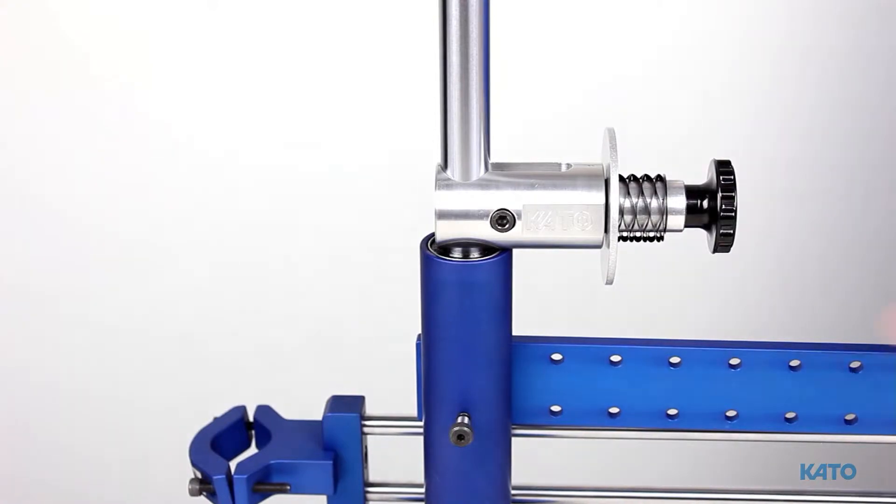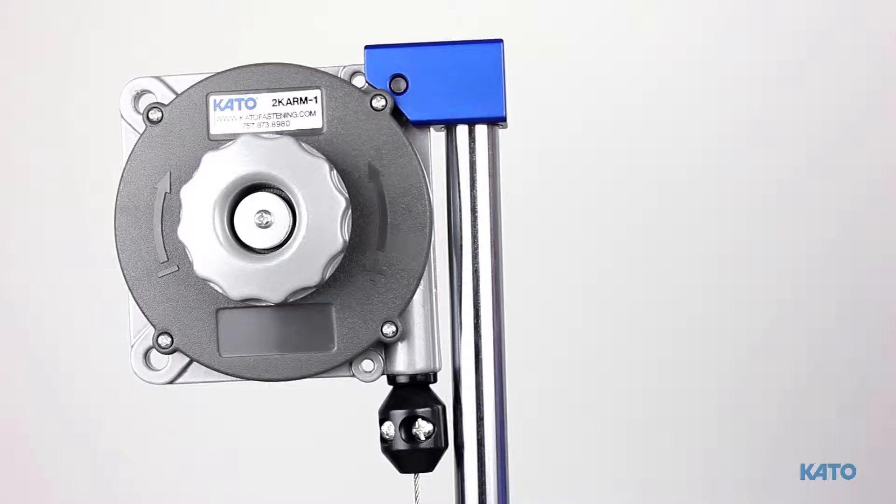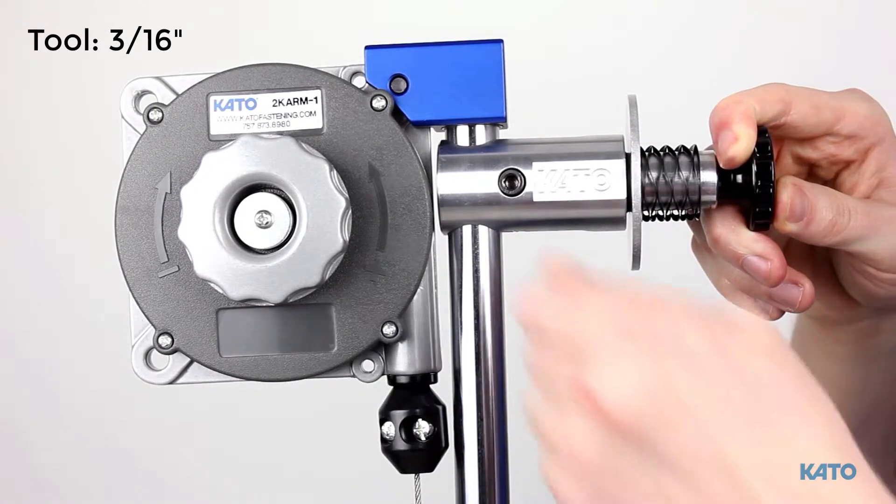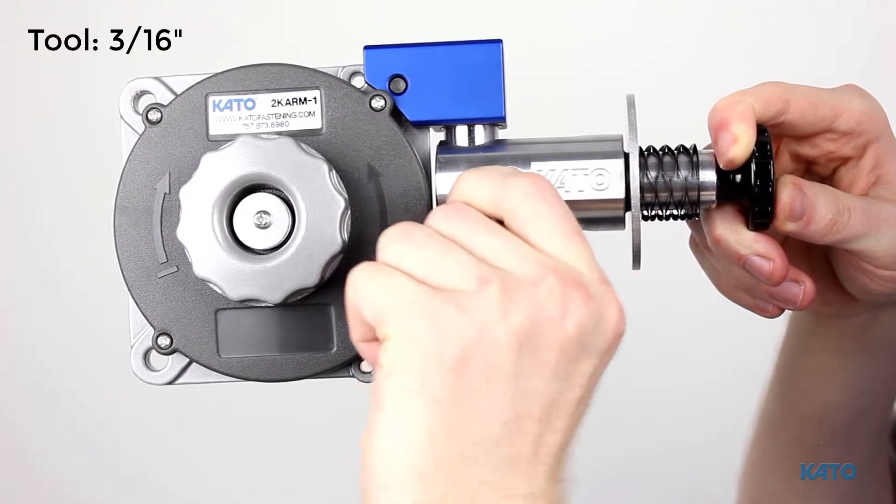Next, let's slide up the strip feed reel bracket and tighten it. Be careful not to over-tighten it, you may damage the bracket.